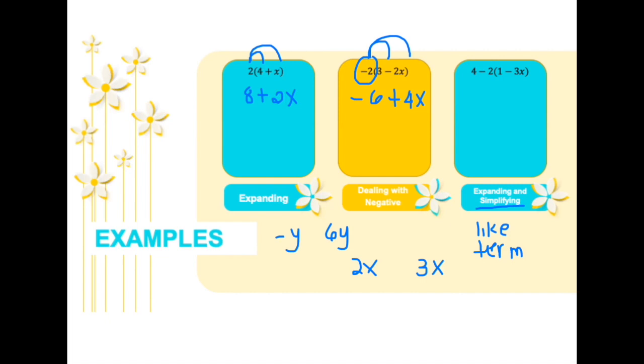So for us to be able to simplify this, the first thing that we have to do is expand by multiplying. So again, since there is a negative sign before 2 outside of the bracket, we have to carry that sign. So negative 2 times 1 will be negative 2. So copy 4 minus 2. And then negative 2 times negative 3x will be positive 6x.